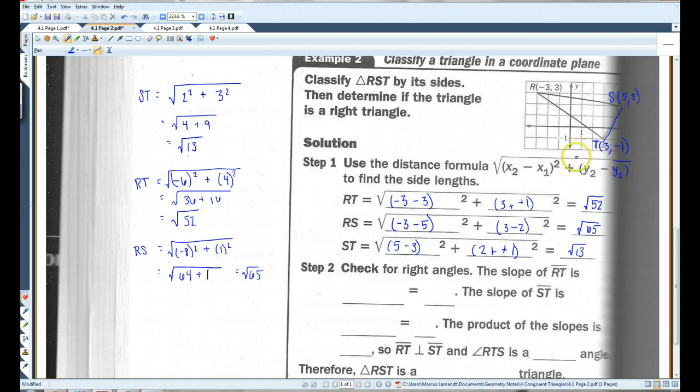The slope of RT, if we use these two points, the rise, the y values, negative 1 minus 3, over the run, the x values, 3 minus negative 3. This minus negative becomes a positive. Negative 1 minus 3 is negative 4. 3 plus 3 is 6. This is negative 4 over 6, which becomes negative 2 over 3.